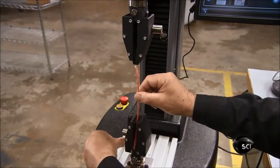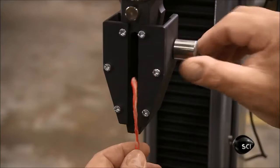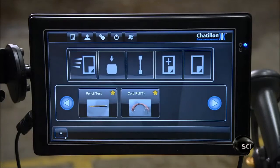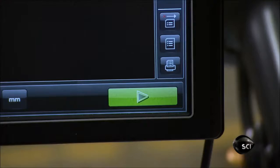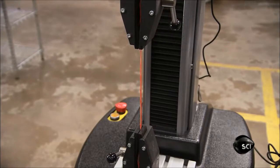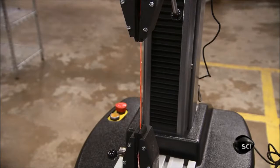A force tester doesn't just bear down on things. It also pulls things apart. A technician conducts a pull test on a piece of nylon cord. He activates the force arm. The force arm pulls the cord as it's gripped at the base.